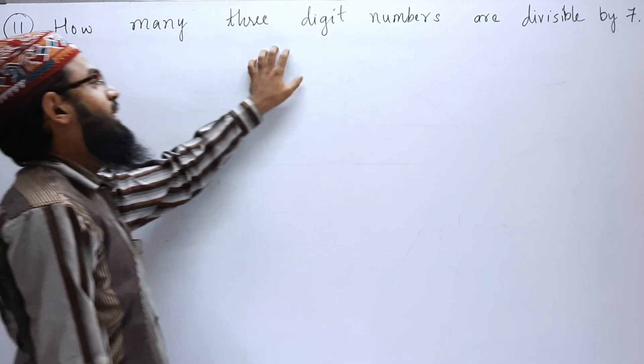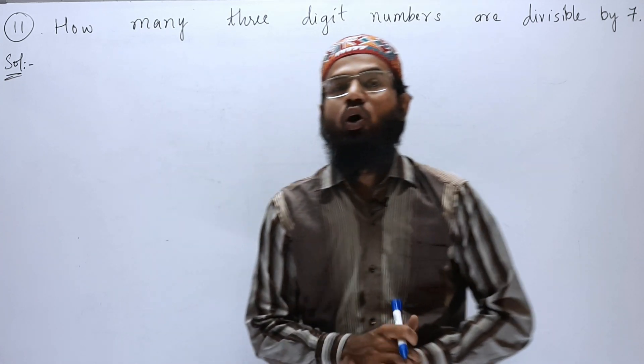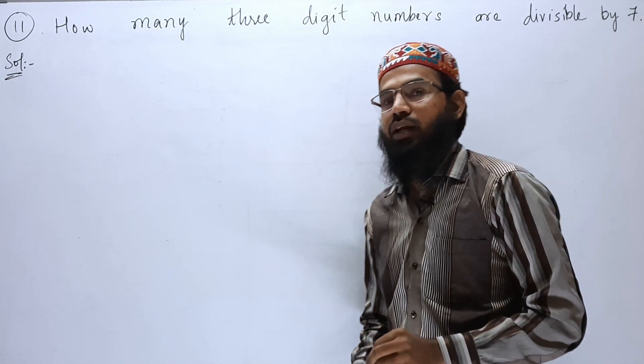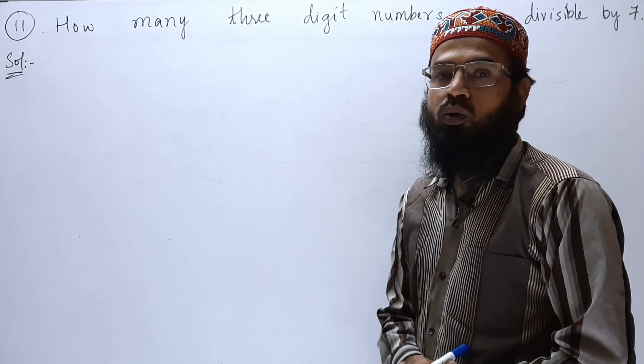11th problem: how many 3-digit numbers are divisible by 7? So we have to find how many 3-digit numbers are there which are divisible by 7, which comes in the 7 table. So let us find out.